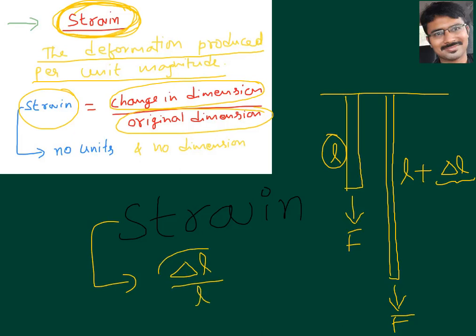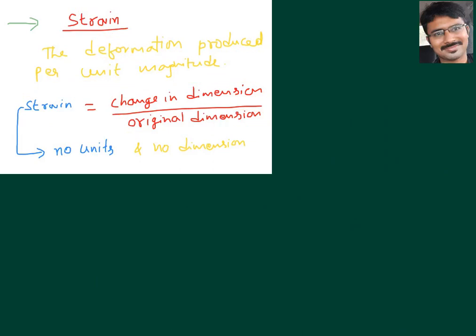So what is ΔL? Change in length. What is L? Original length. The definition of strain is: strain is nothing but change in dimension to original dimension. That is the definition for strain — whenever strain is there, there is change in dimension to original dimension.